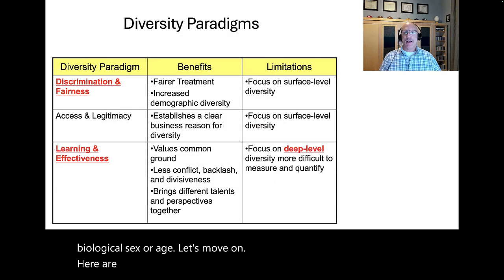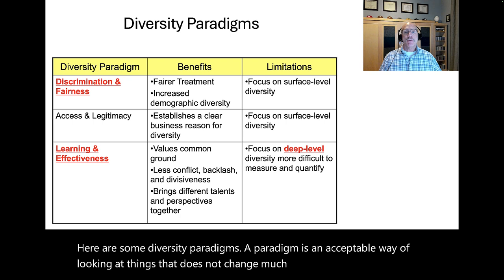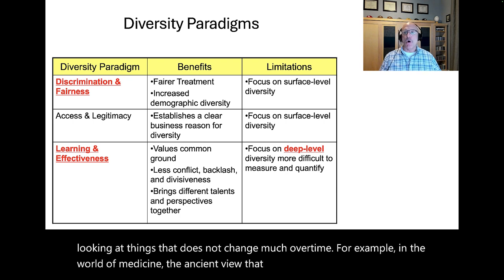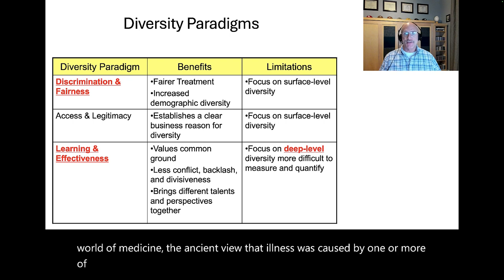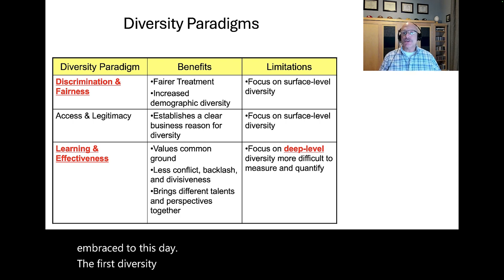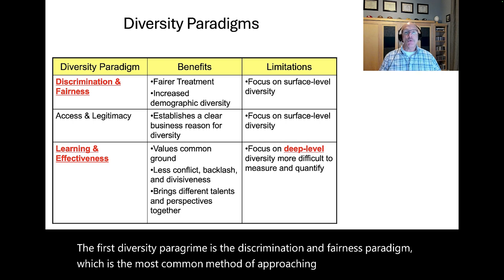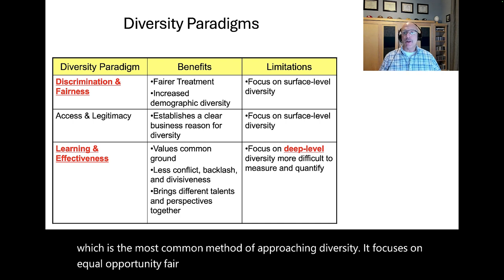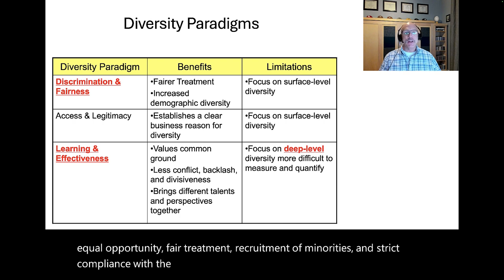Here are some diversity paradigms. A paradigm is an acceptable way of looking at things that does not change much over time. For example, in medicine, the ancient view that illness was caused by the four humors — blood, phlegm, yellow bile, and black bile — gave way to a paradigmatic shift to the germ theory of illness. The first diversity paradigm is the discrimination and fairness paradigm, the most common method of approaching diversity. It focuses on equal opportunity, fair treatment, recruitment of minorities, and strict compliance with equal employment opportunity laws. These are things that almost no one could disagree with.